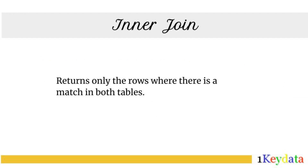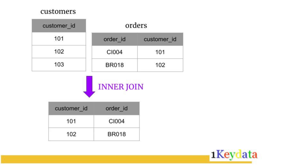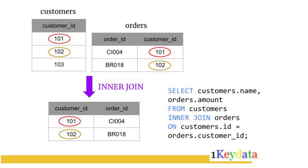An inner join returns only the rows where there is a match in both tables. Think of it as finding the intersection of two datasets. For example, if you have a customers table and an orders table, an inner join would only show customers who have placed orders — in this case customer ID 101 and 102. Customer ID 103 is not in the result set because it is not present in the orders table. Here is the query we use for this.